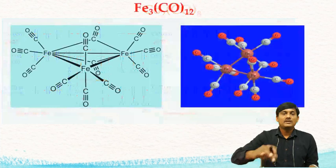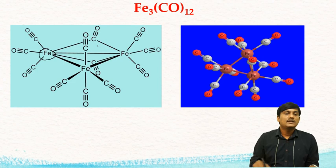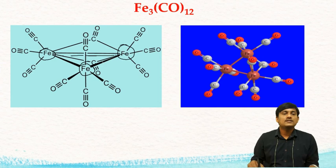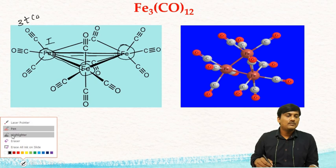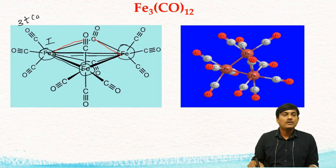Let us take the structure of Fe₃CO₁₂. In this case, we have 3 Fe metal atoms arranged in a trigonal planar geometry. The first iron is connected with 3 terminal COs and 2 bridged COs.